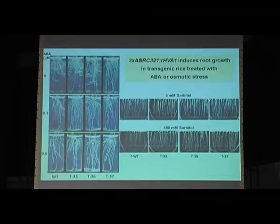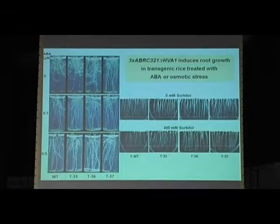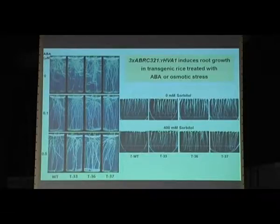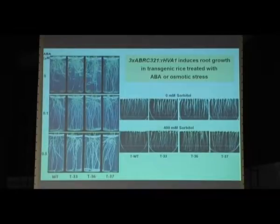We then checked root growth. Without ABA, there is a slight increase in root growth in transgenic lines, but with a low concentration of ABA we see better root system growth compared to wild type. At high ABA concentration, root growth is inhibited. This differs from Arabidopsis where ABA always suppresses root growth; in rice, it depends on ABA concentration. Under sorbitol treatment mimicking osmotic stress, after treatment there is a significant increase in root growth in transgenic lines.